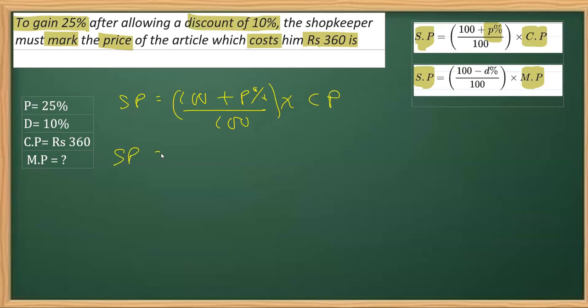So replacing this profit percent with its value, that is 25 over 100 multiplied by the CP which is 360. So this comes out to be 125 over 100 multiplied by 360.